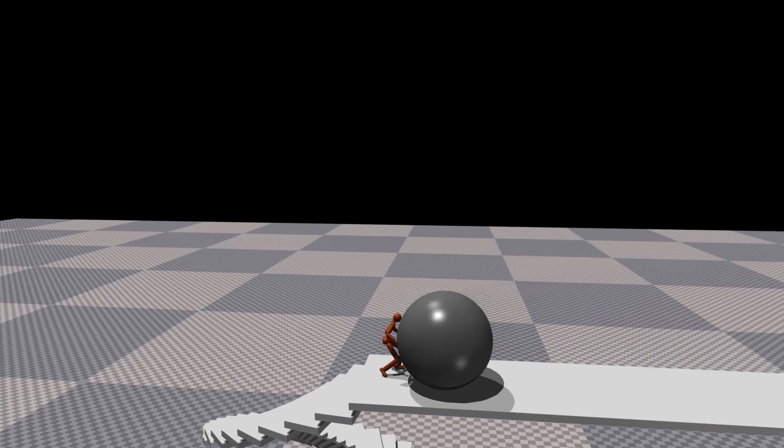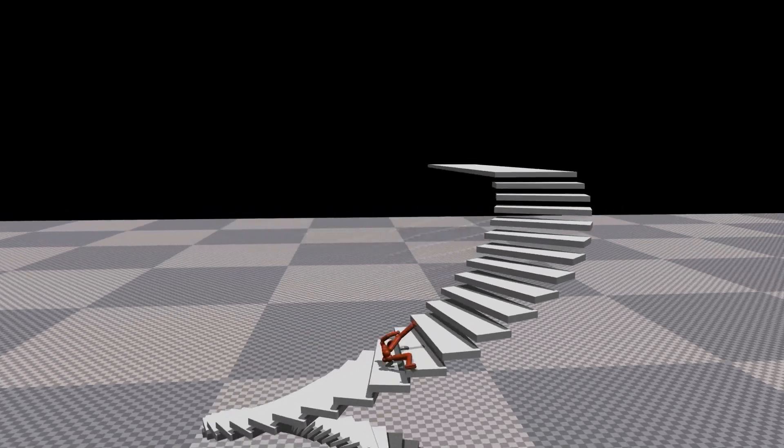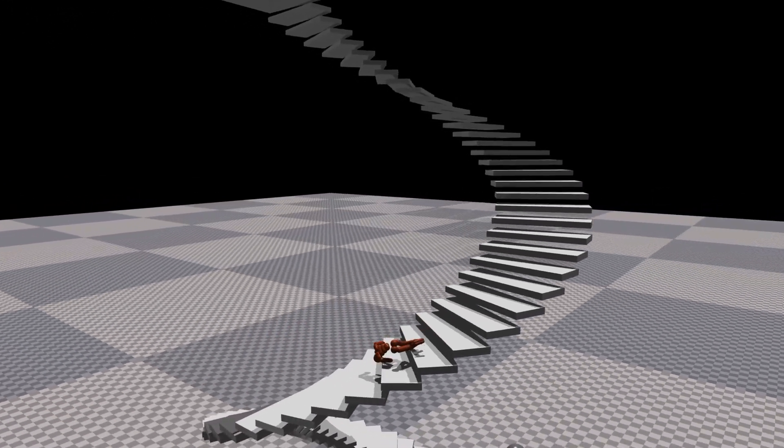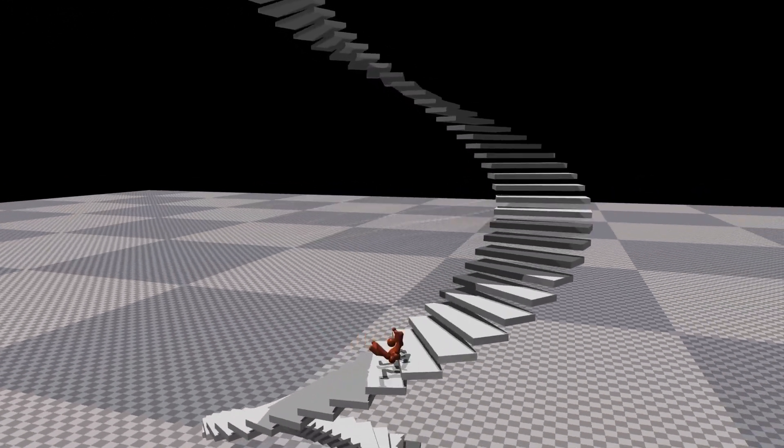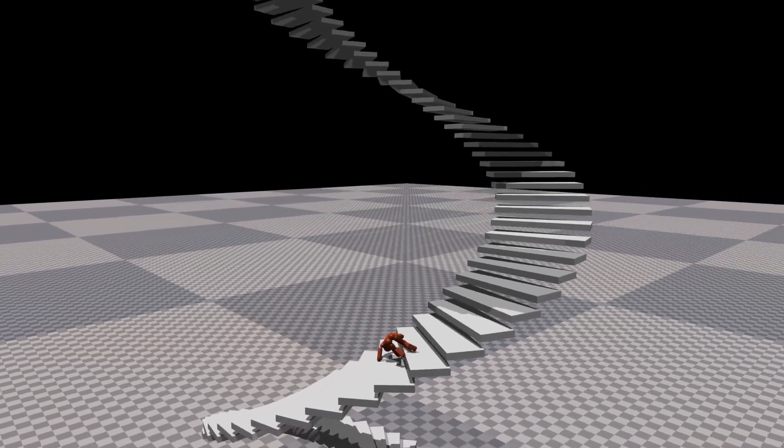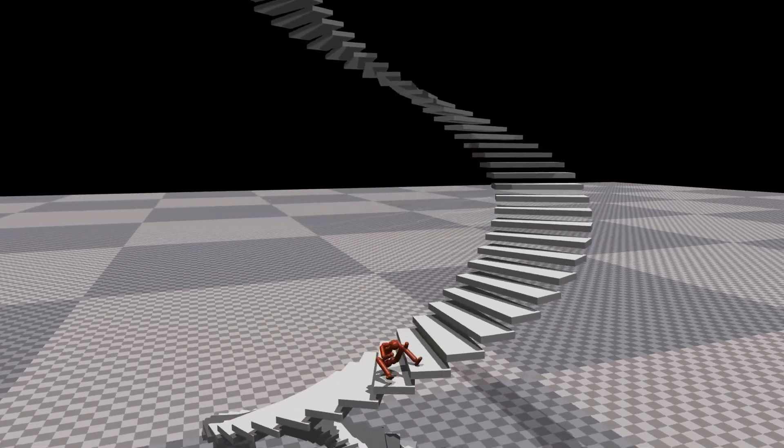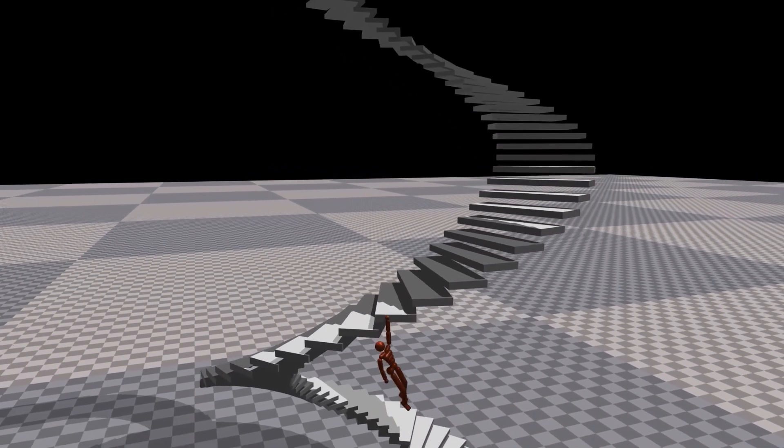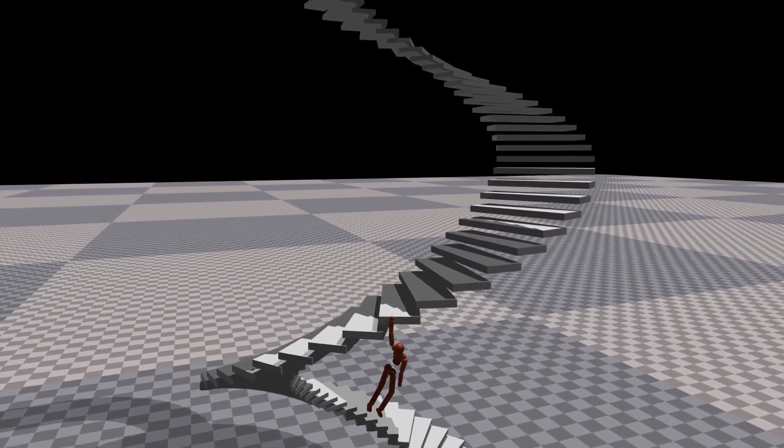The stunt actor successfully performs the action, satisfying the user-specified constraints, including the trajectory, posture, orientation, and angular velocity. To create a believable animation for this complex stunt environment, it takes only 120 minutes in total, including setting up the simulation environment and the entire authoring process.